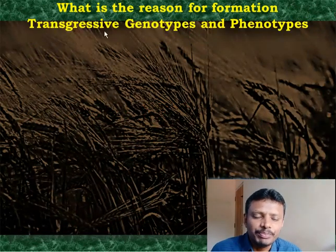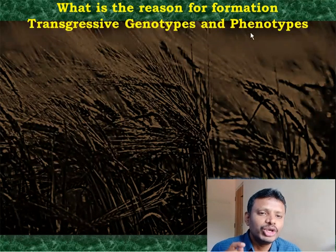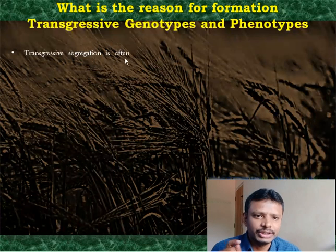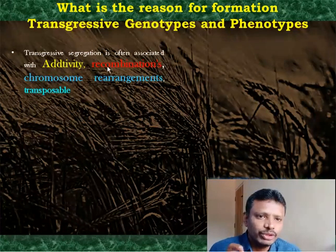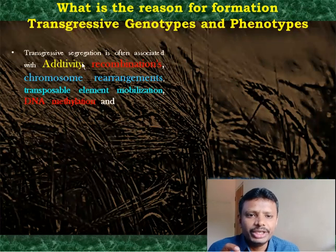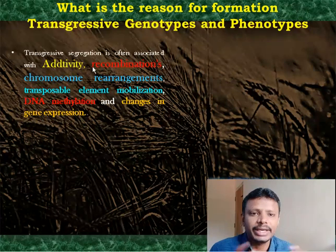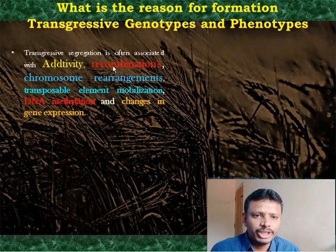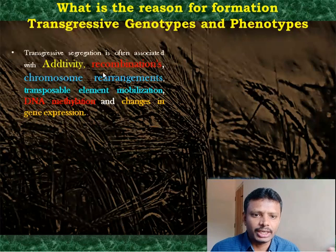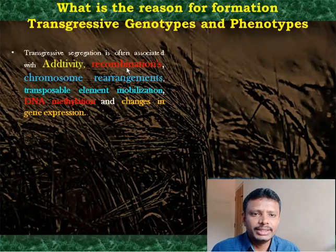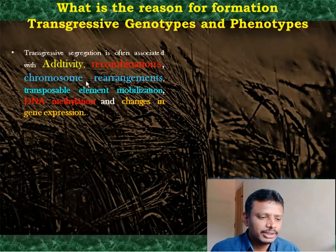Why do these transgressives appear? Because of molecular events. First is additivity — addition of all dominant genes, grouping up all dominant genes, which increases pigment such as redness in kernel color in wheat. Second is recombination — if dominant genes distributed in two parental types come together through segregation, new progenies are formed which are again transgressive.